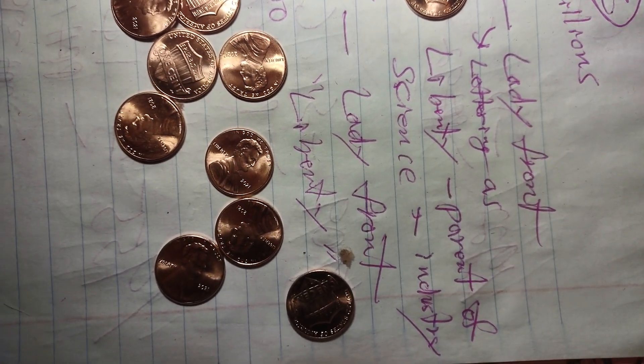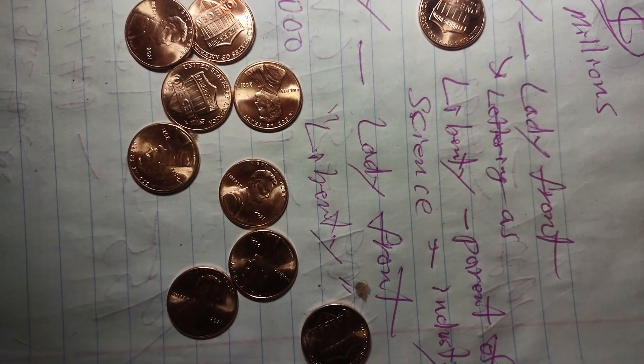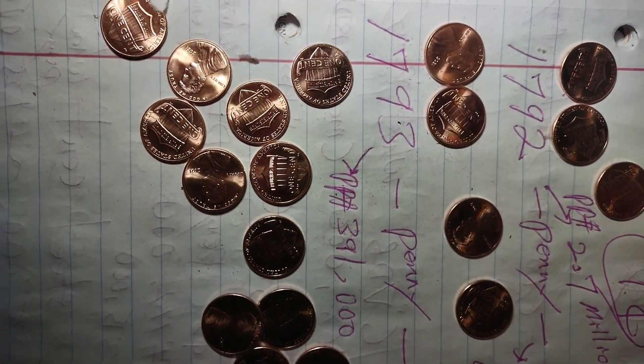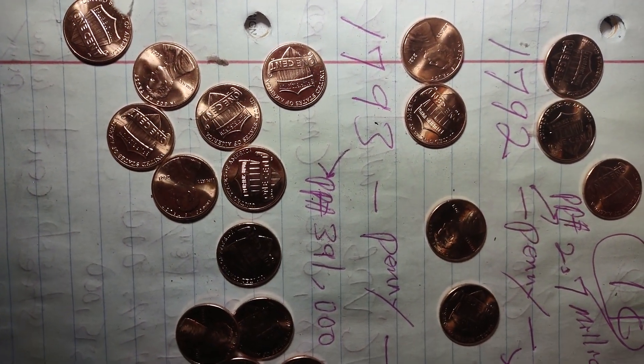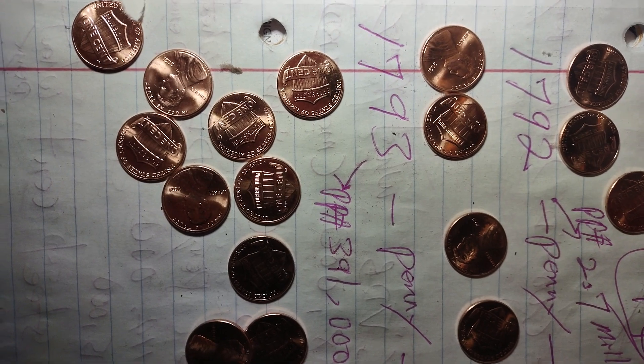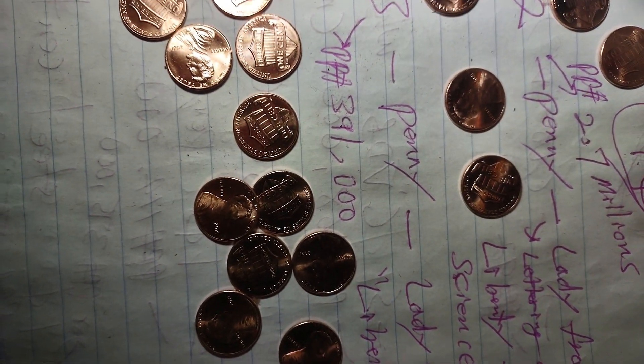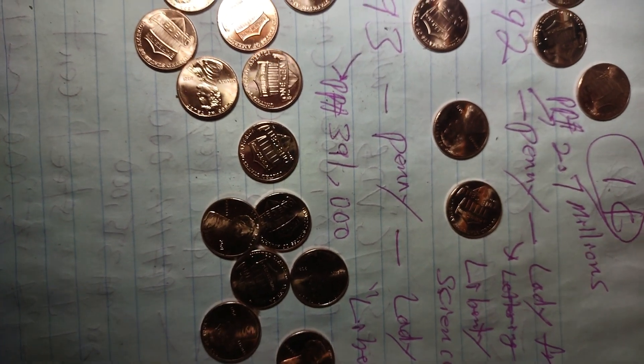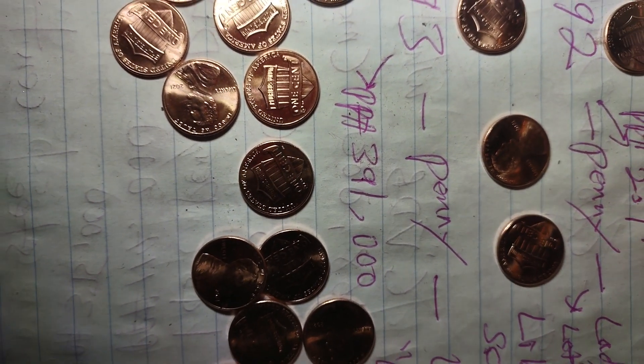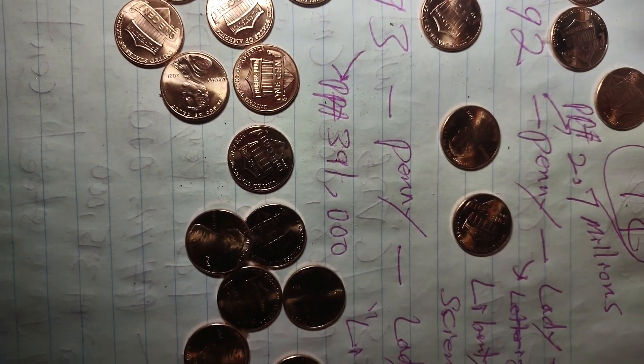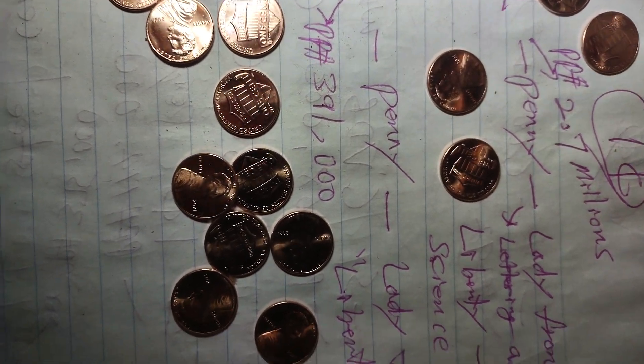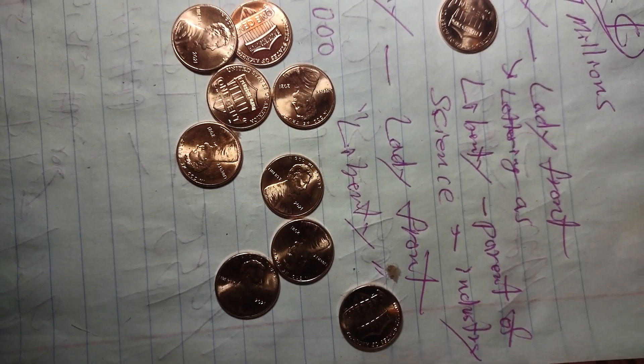The first one was 1792, this one is a 1793. This coin and penny is selling for $391,000. The lady in front has Liberty on it.